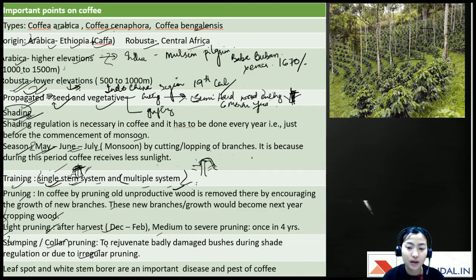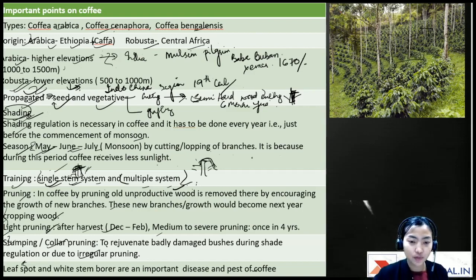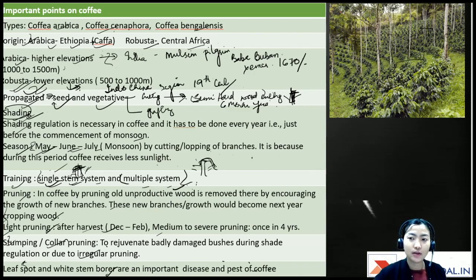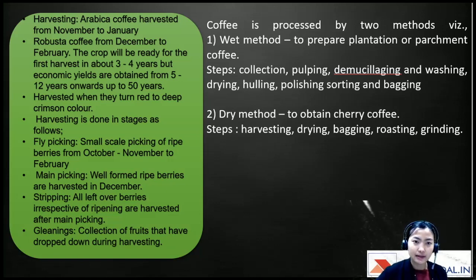Leaf spot and white stem borer are important diseases and pests of coffee. Arabica coffee is more susceptible to leaf spot — there will be defoliation, yellow spots, and powdery orange color forming on leaves. The twigs will also become dead, dry, and black. The stem borer is also a major pest, and questions often come on important diseases and pests of coffee.